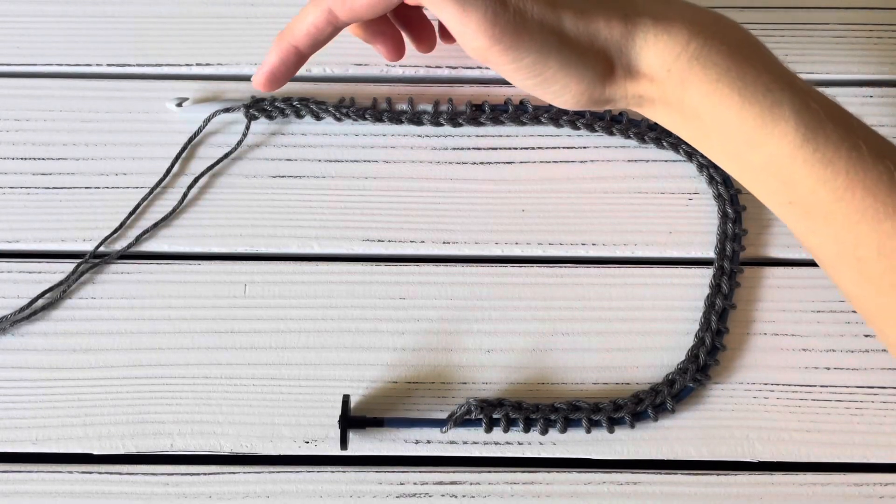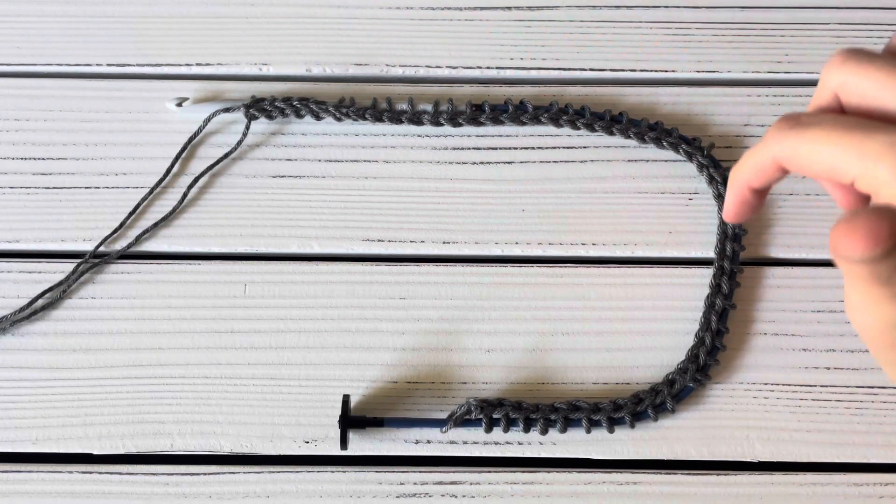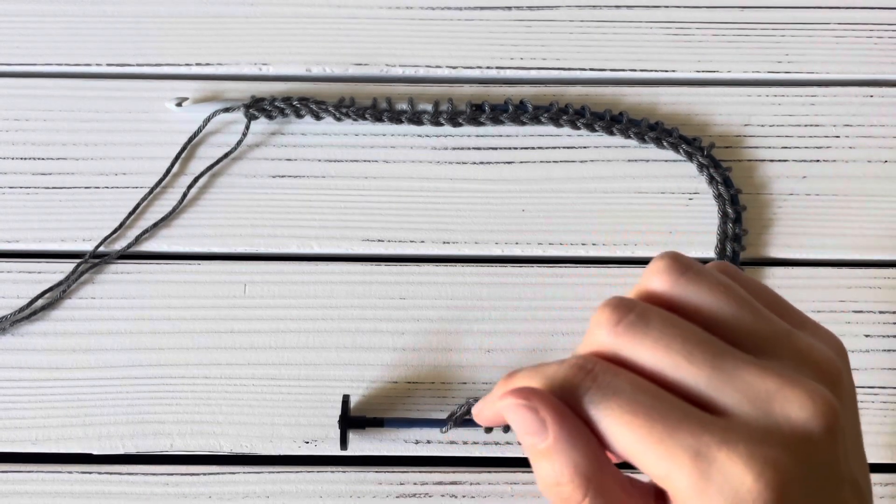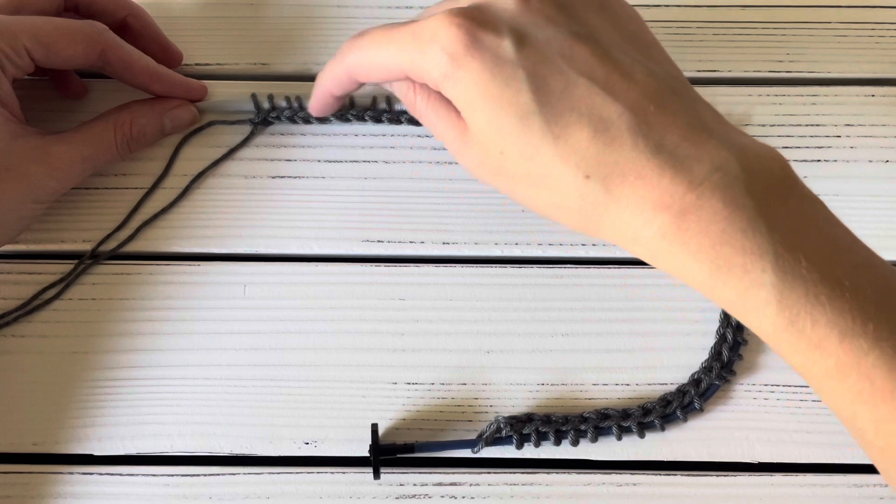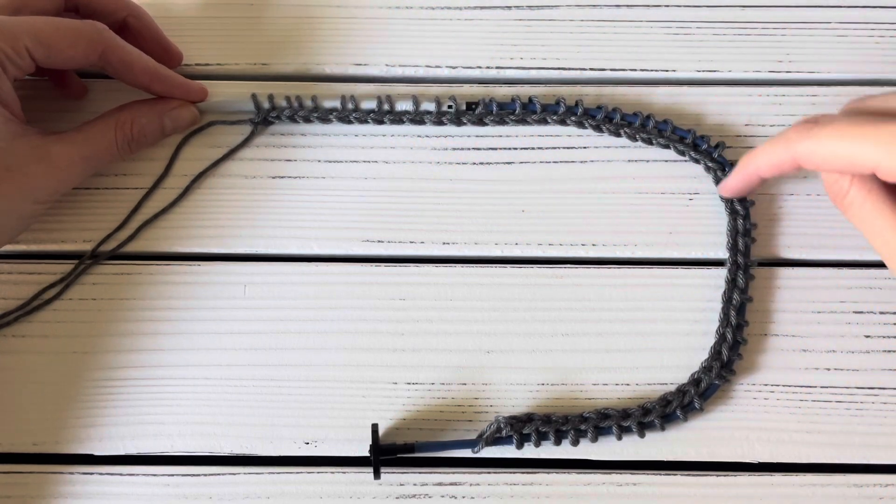Start by pulling up all your loops and your chains for your foundation row on a cabled hook, and then lay it flat and make sure your stitches are not twisted.